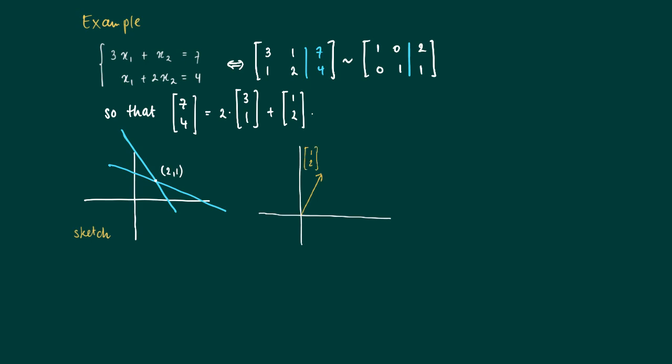Another way of expressing this is that we need to express the vector [7,4] as a linear combination of [3,1] and [1,2]. Well, actually we've seen that we need to take 2 times the vector [3,1] and add 1 times [1,2] to arrive at [7,4].